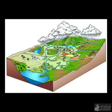A watershed is an area of land where all the water on the land drains into one main lake, river, and then onto a major body of water.